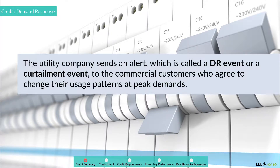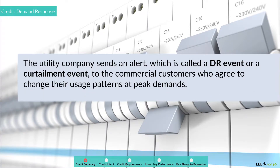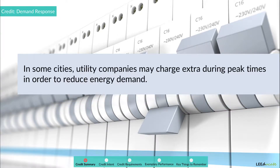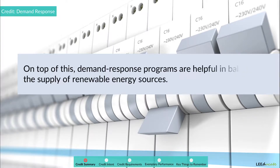The utility company sends an alert, called a DR event or curtailment event, to commercial customers who agree to change their usage patterns at peak demands. In turn, the commercial consumers reduce their demand. Consumers are rewarded for their participation in demand response programs and the construction of additional power plants is avoided. In some cities, utility companies may charge extra during peak times to reduce energy demand. Additionally, demand response programs are helpful in balancing the supply of renewable energy sources.